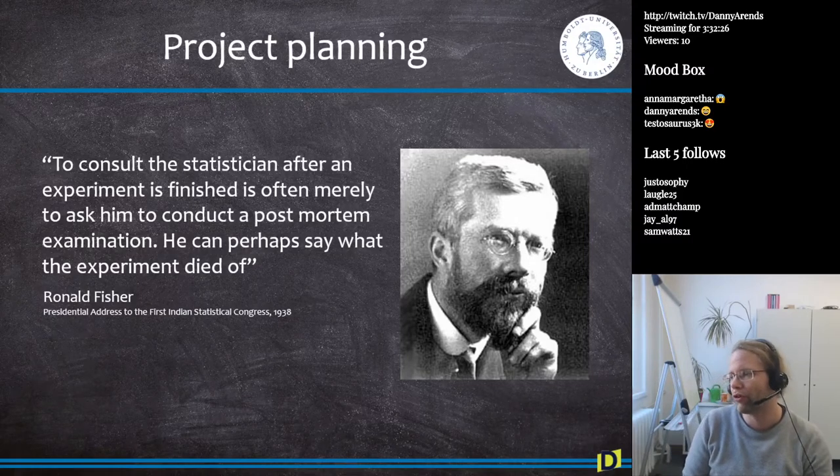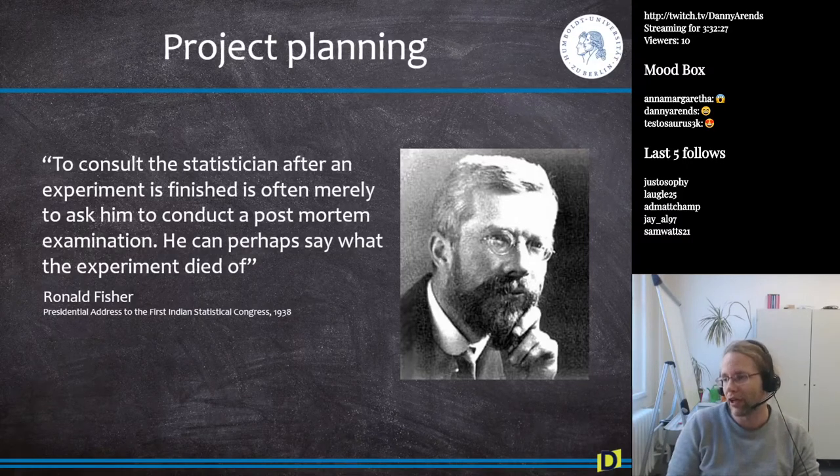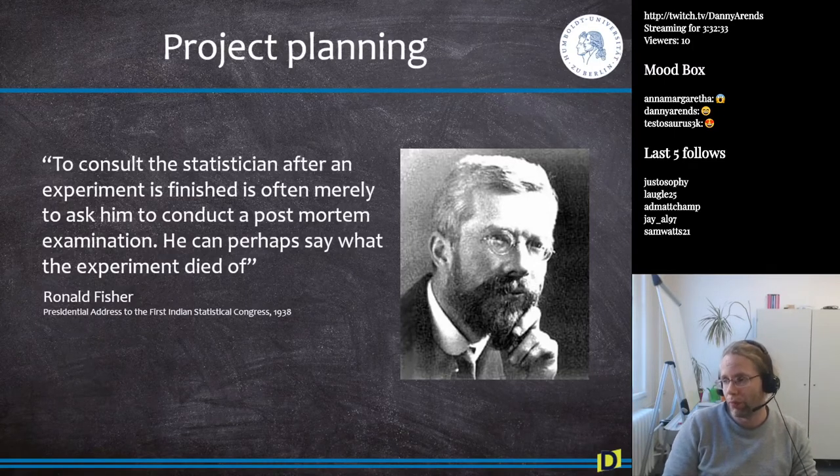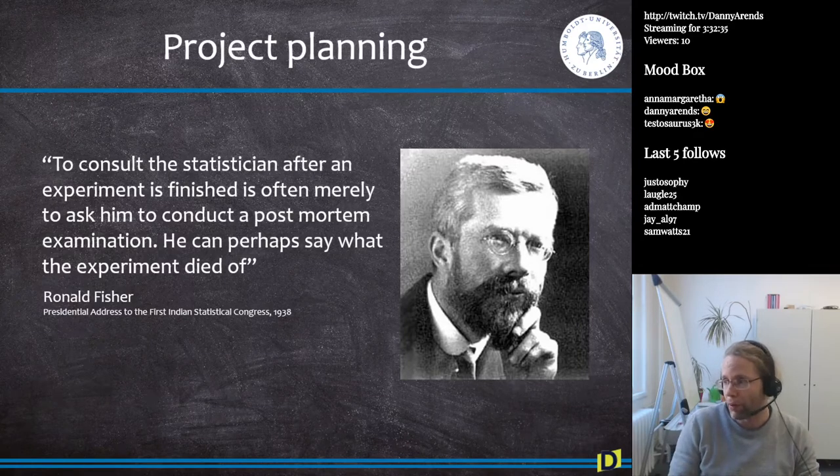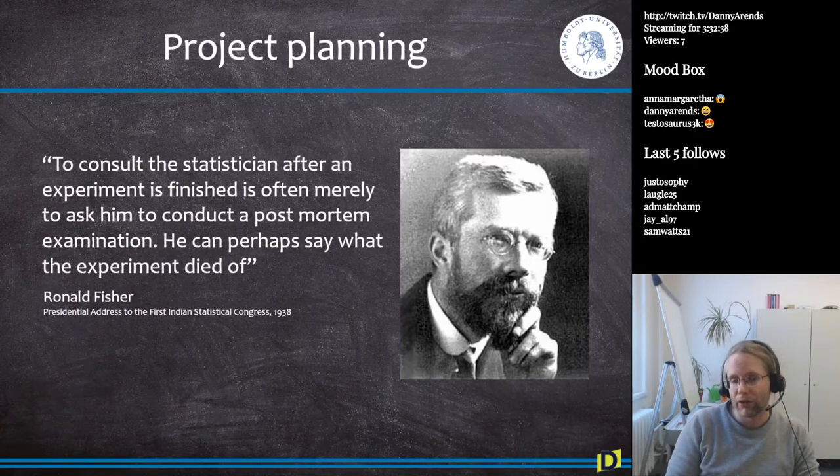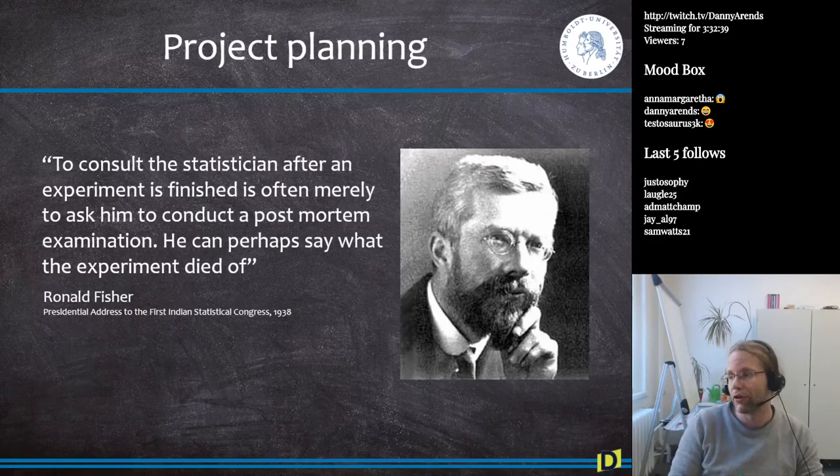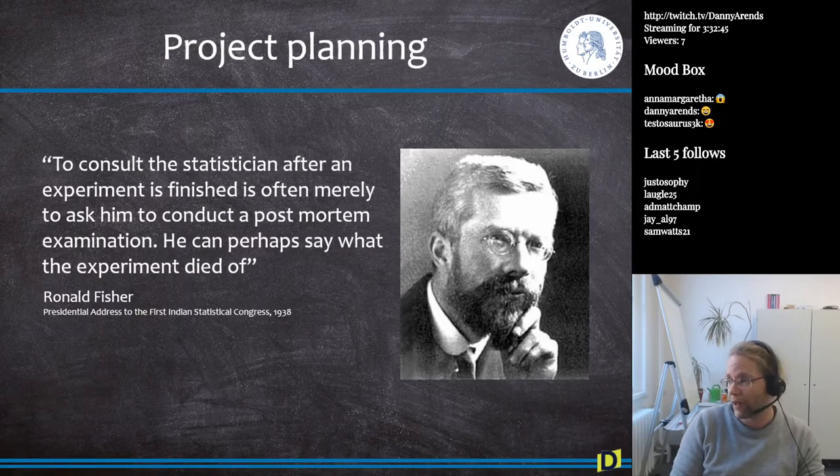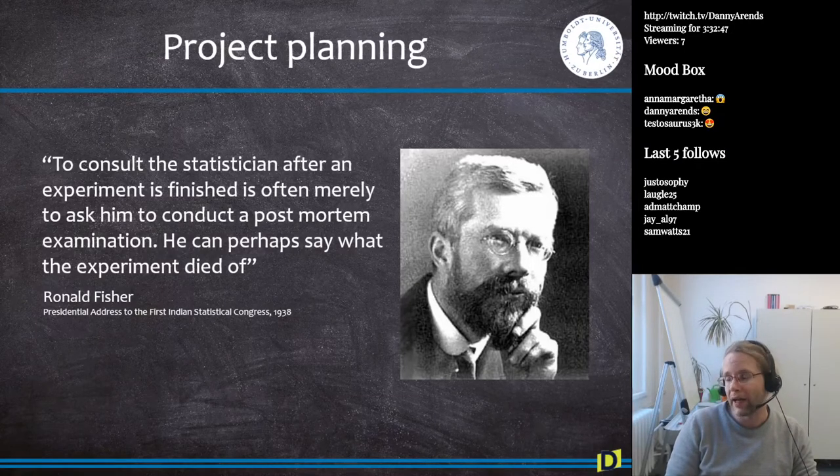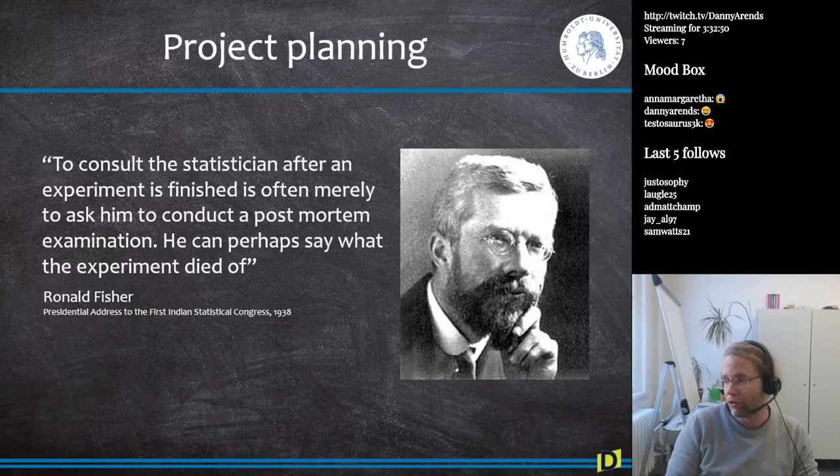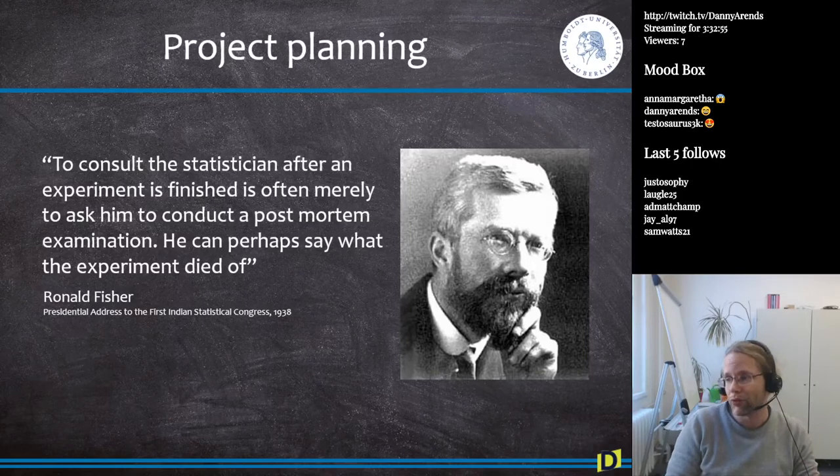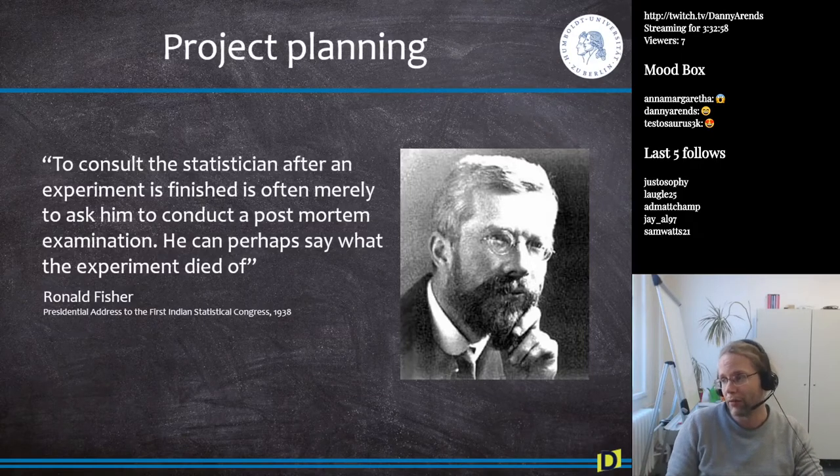And of course this threshold is kind of arbitrary, right, this one in 20 threshold that we always talk about, but it is a threshold that is rigorously kept to when we do when we write papers and we want to publish results. So definitely consult a statistician before you start doing stuff because you don't want to run into the situation where you spend half of your PhD collecting data and then in the final stages when you write your paper and you do your analysis of the data that you collected, you end up with a sample size which is just a few animals too little.